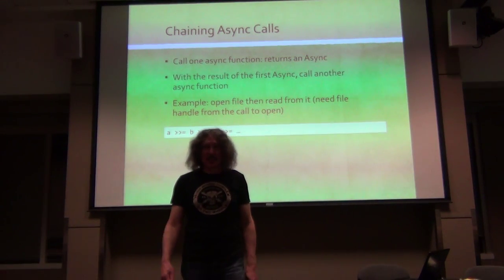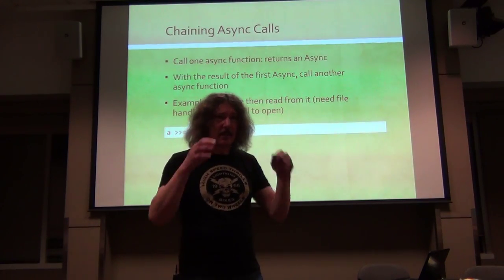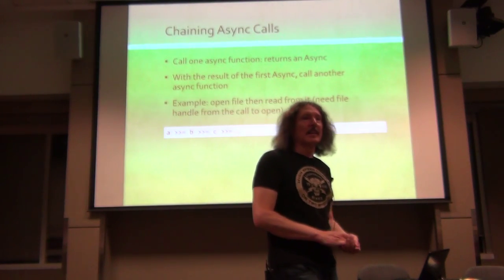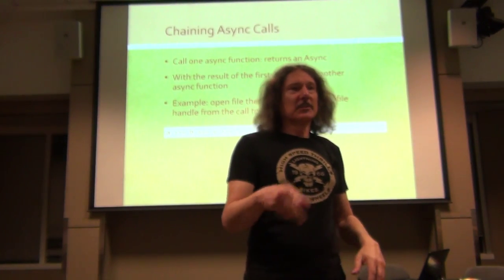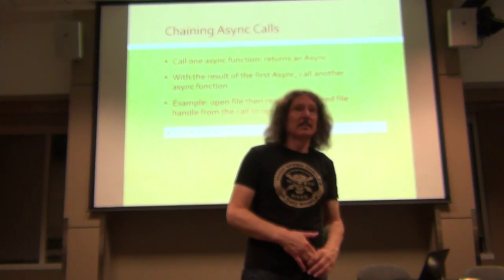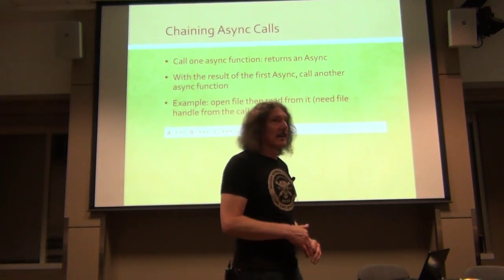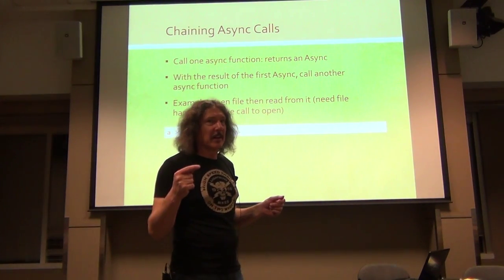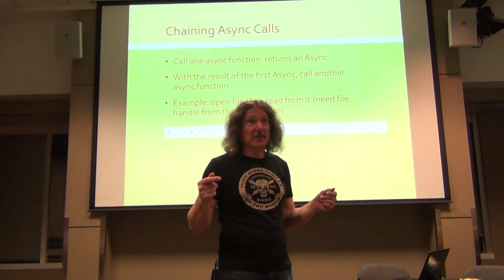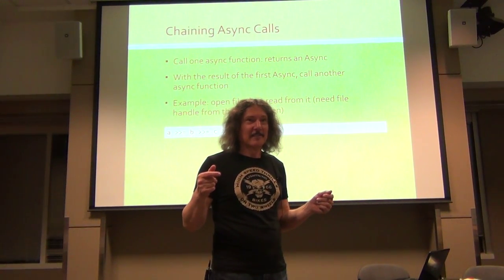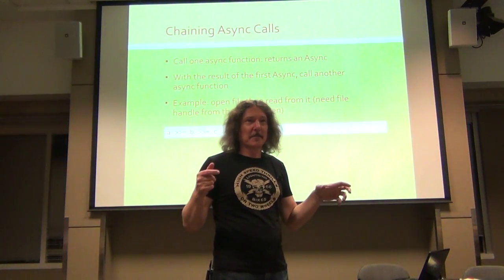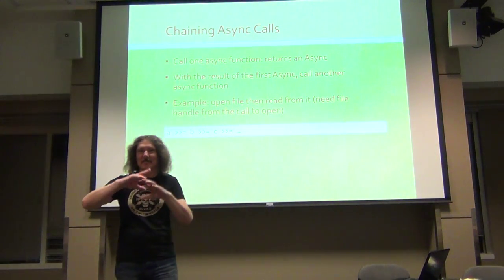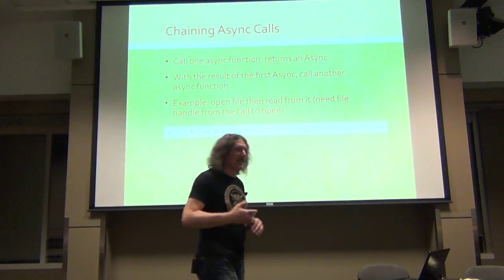The hardest part is chaining these things. We want to be able to asynchronously open a file and say, after doing this, please read a buffer from this file. So these are two async operations - opening a file and reading from a file. The funny thing is that reading from a file requires a file handle, and this file handle is provided by the first async operation. So you'd like to chain them nicely.